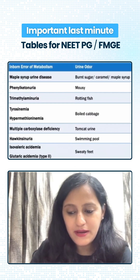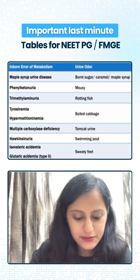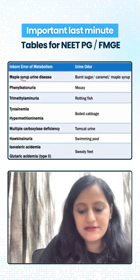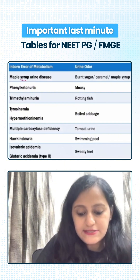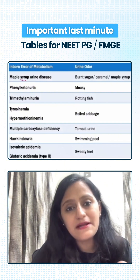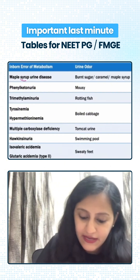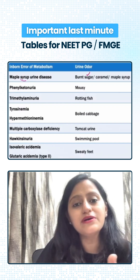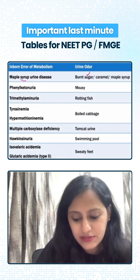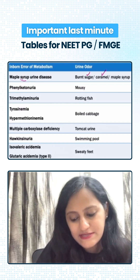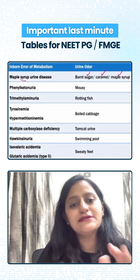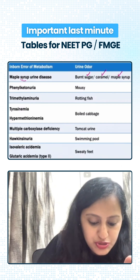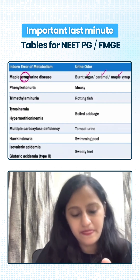The first one — what urine odor do we have in maple syrup urine disease, MSUD? Remember it as syrup. Syrup contains sugar, so it is burnt sugar odor. When you burn the sugar it is called caramel, or it is maple syrup. So remember: syrup has a sugar-wala odor, that is burnt sugar.